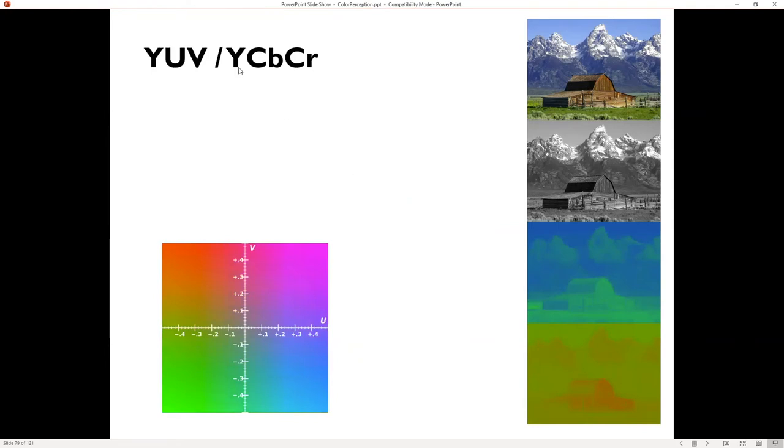YUV, sometimes related to or called YCbCr, is a similar kind of space. I have this Y is still my black and white. Here's my UV. My space here is a little different.